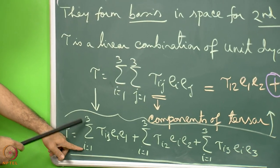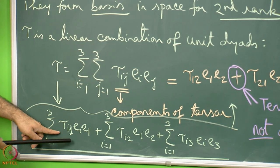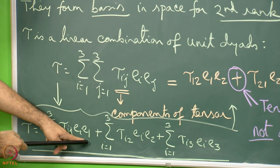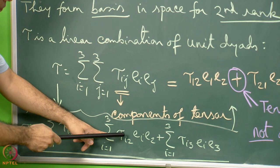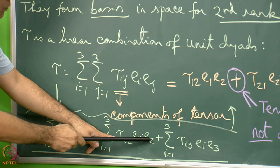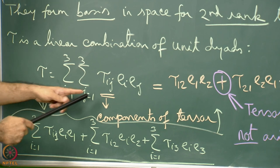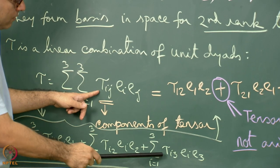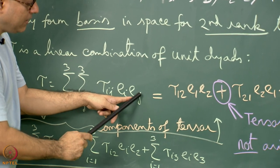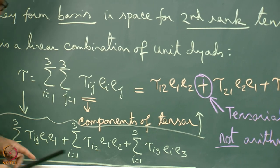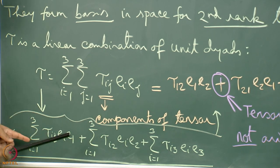Opening up j from 1 to 3: tau equals the sum over i of tau_i1 E_i E1, plus the sum over i of tau_i2 E_i E2, plus the sum over i of tau_i3 E_i E3. Each of these 3 terms will give 3 terms, so 3 multiplied by 3 gives 9 terms total.